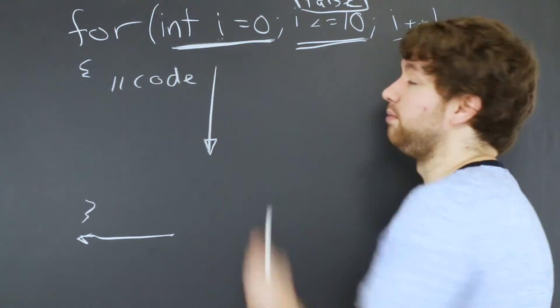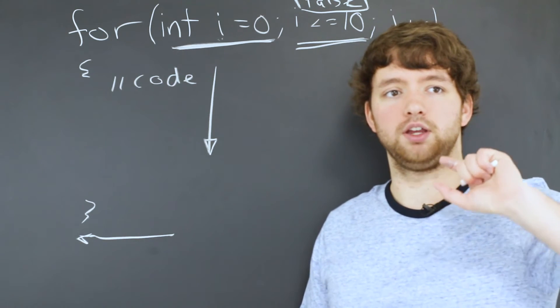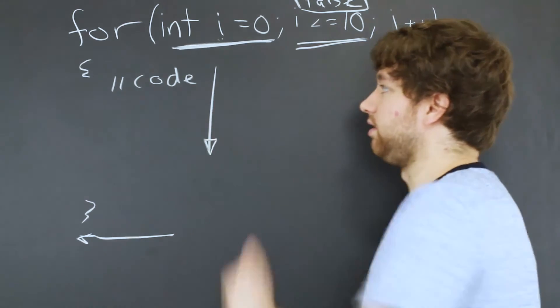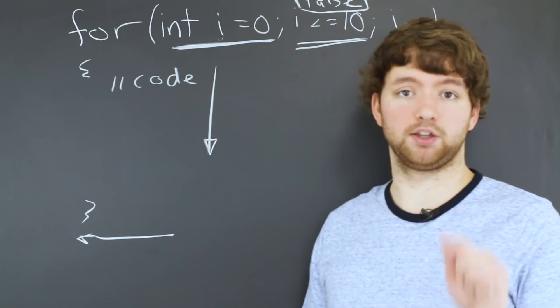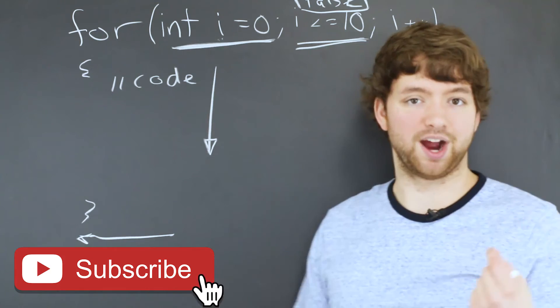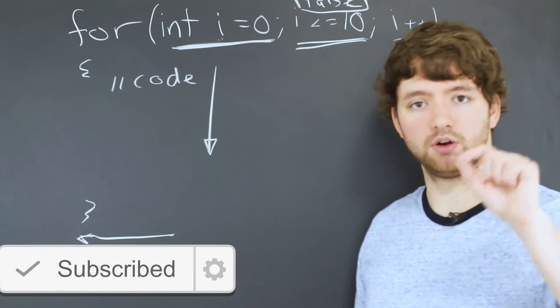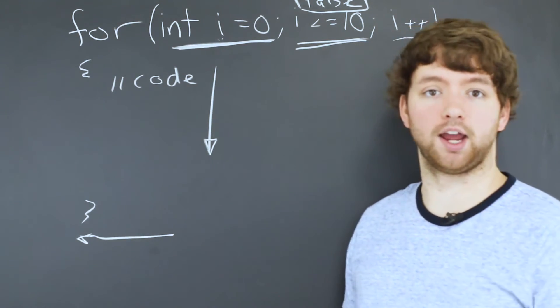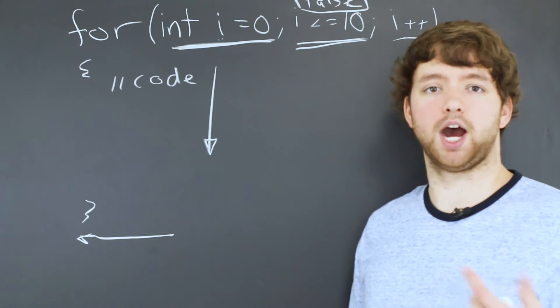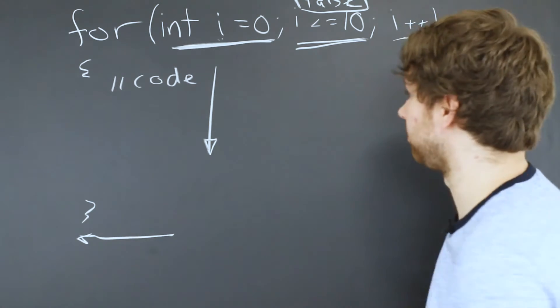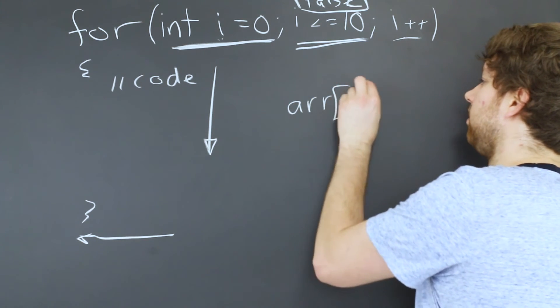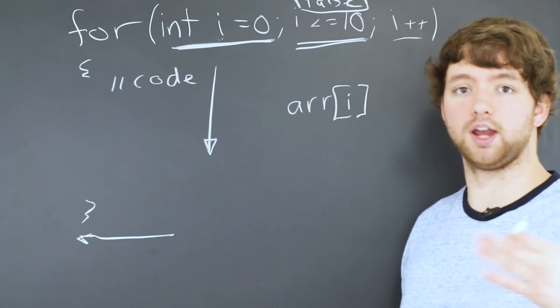Now the variable i can be used to go through arrays or to change what's being executed in this code. For example, we can print the value of i, and since the value of i is being increased every time, we can use this to count. So if we printed this out it would print zero, one, two, all the way up to nine—ten times starting at zero. If you wanted to do it from one to ten, you could just print i plus one. And you can do all kinds of things. For example, if you have an array, you can access the index using i, and that will allow you to iterate through.